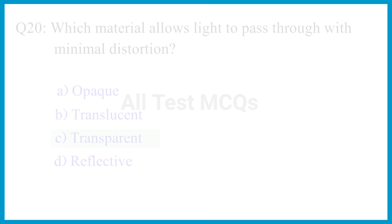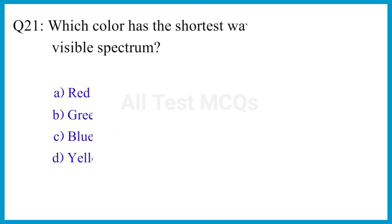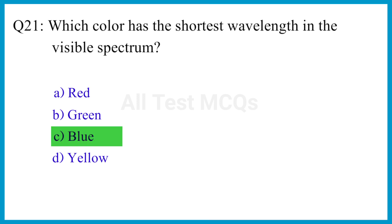Question number 21. Which color has the shortest wavelength in the visible spectrum? The correct answer is option C. Blue.